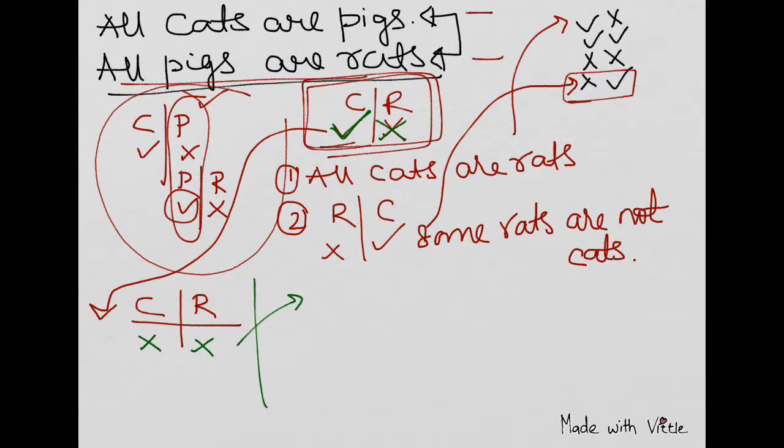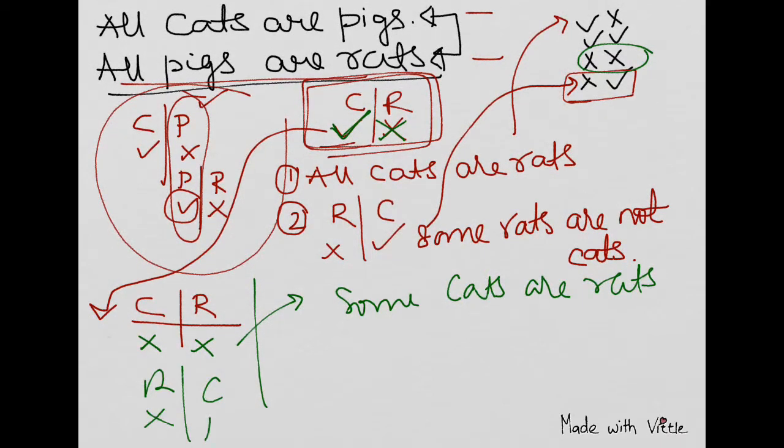So what we get for this? Cross-cross. Cross-cross is this. So there will be some cats are rats. And similarly, just reverse it. Some rats are cats.